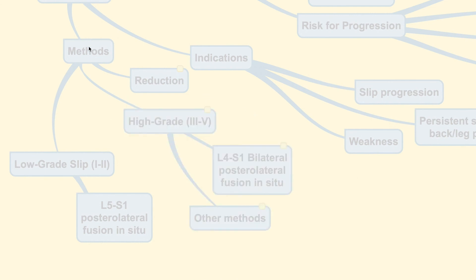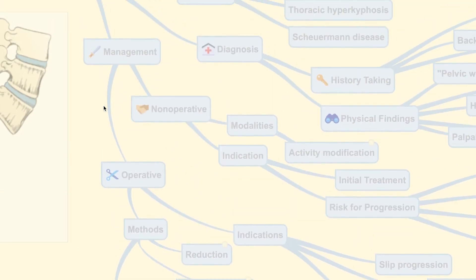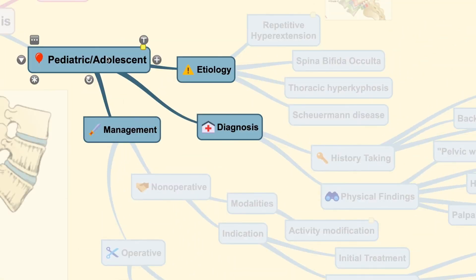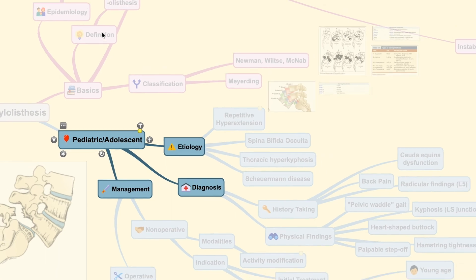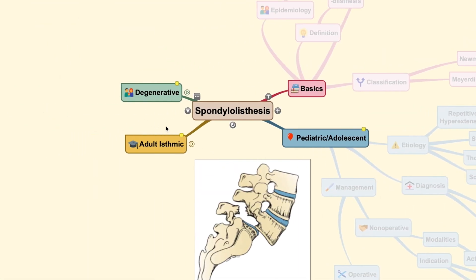Now, to better understand the various types of spine surgery, I will cover them in another video regarding spine surgery basics. Now, that would be all for today's teaching. I hope you enjoy this video and do look forward for the next video to Spondylolisthesis Part 2, which covers the adult isthmic type of Spondylolisthesis and the degenerative type of Spondylolisthesis.